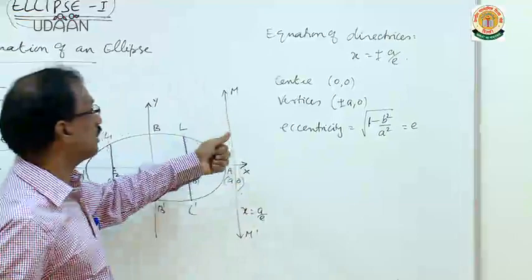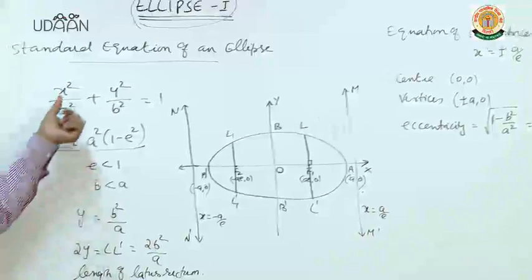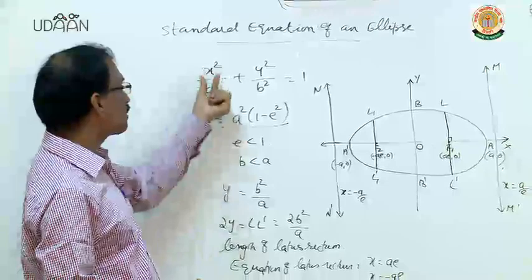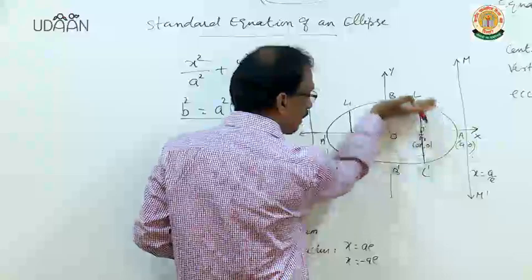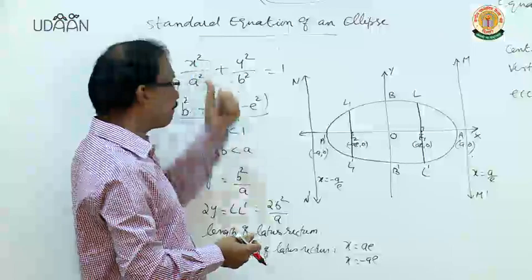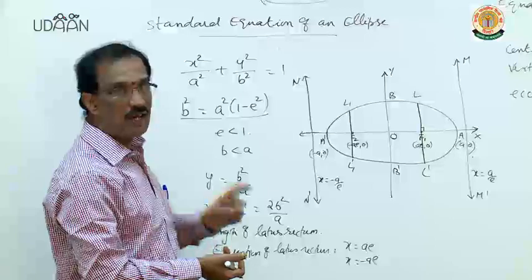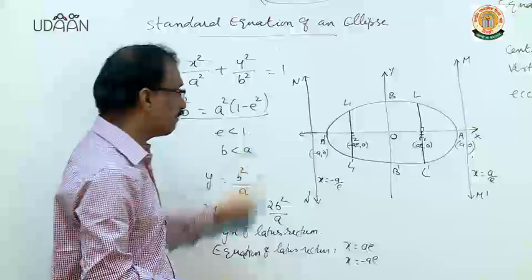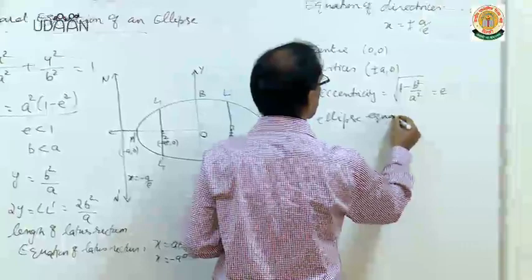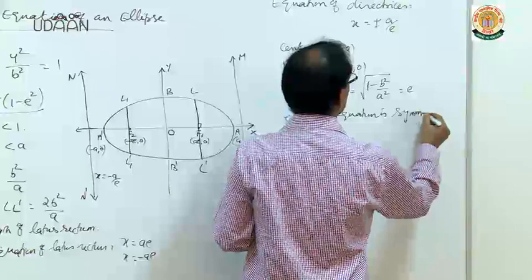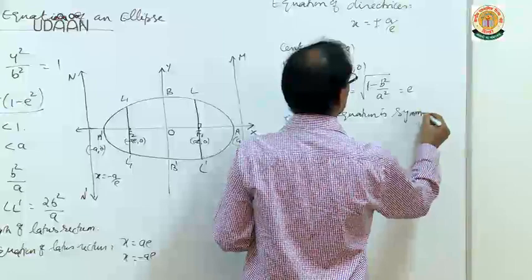So eccentricity, focus, vertices, center, and equations of directrices are obtained. The equation x²/a² + y²/b² = 1 is a second-degree equation in x and y, so it is symmetric about both the x-axis and y-axis, since replacing x with -x or y with -y leaves the equation unchanged.